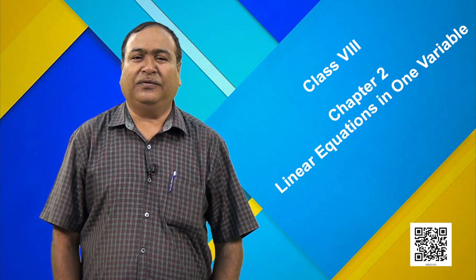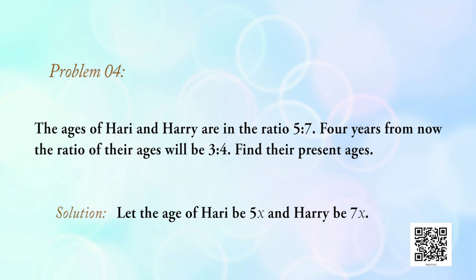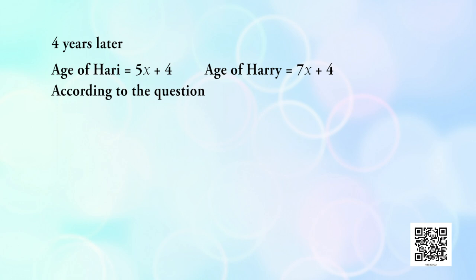Let us solve one word problem in this situation. The ages of Hari and Harry are in the ratio 5 : 7. Four years from now, the ratio of their ages will be 3 : 4. Find their present ages. Let Hari's age be 5x and Harry's age be 7x. Four years later, Hari's age becomes 5x + 4 and Harry's becomes 7x + 4, and this ratio equals 3/4, so (5x + 4)/(7x + 4) = 3/4.